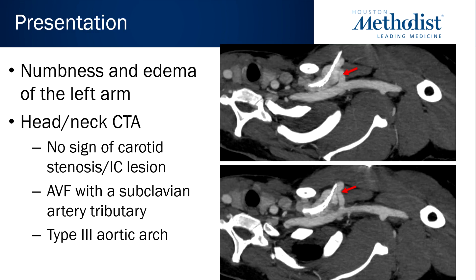The patient presented with left arm numbness and edema. Head and neck CT angiography did not show any sign of arterial stenosis, occlusion, or intracranial lesion. However, a subclavian arteriovenous fistula was verified between the thoracoacromial trunk and the subclavian vein, with subsequent dilation of the vein potentially caused by the ICD lead in the subclavian vein.